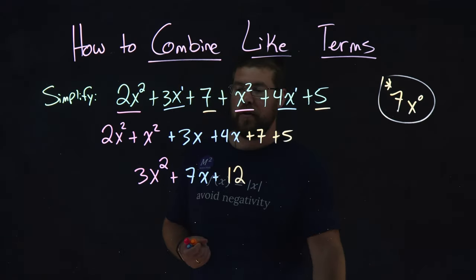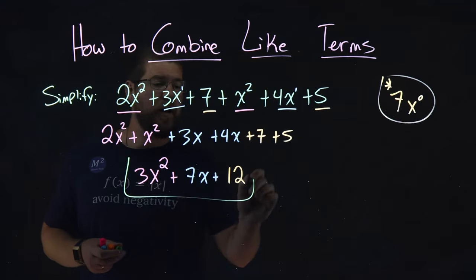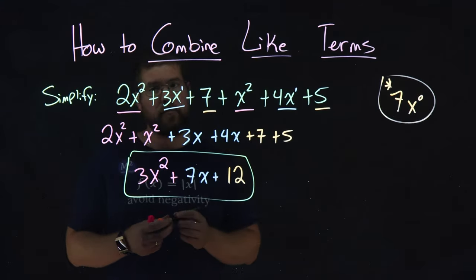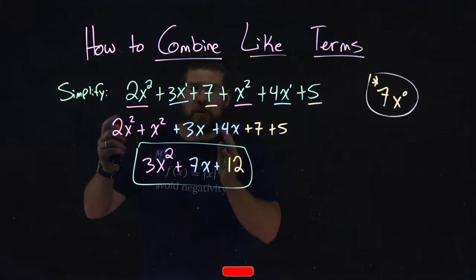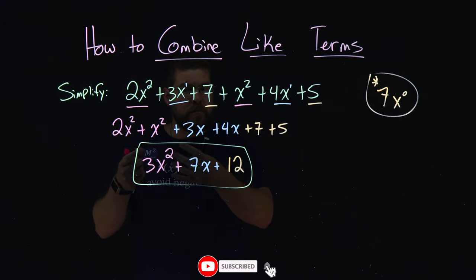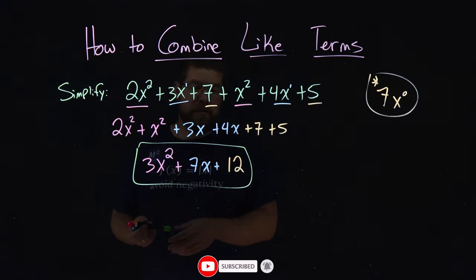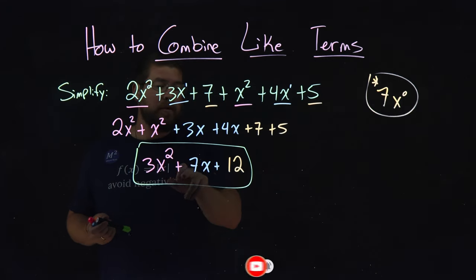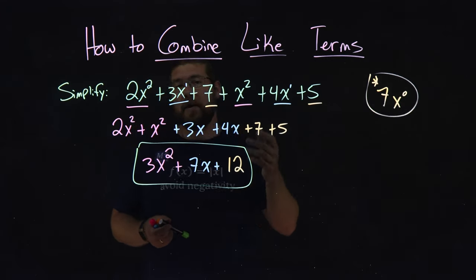And there we have it. We've learned how to combine like terms with a basic expression. We rearrange our terms, combine our like terms, and we got a final solution of 3x squared plus 7x plus 12.